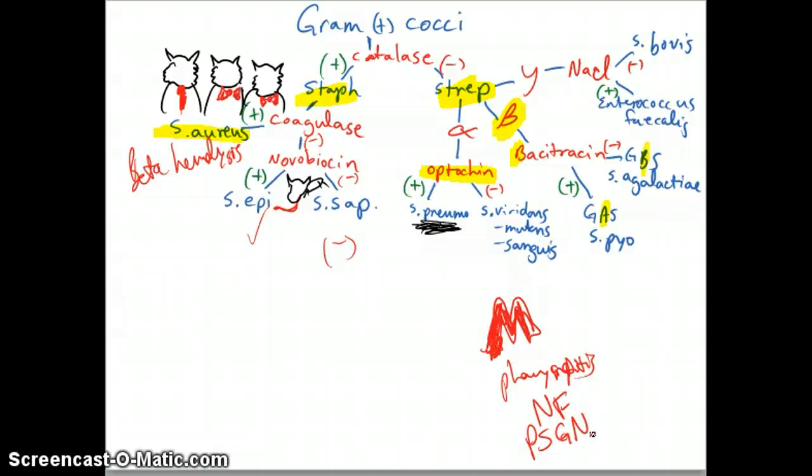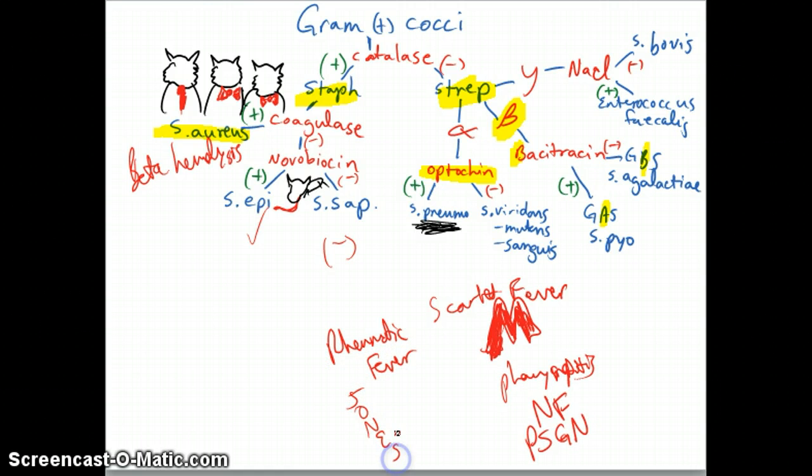So it's also going to cause scarlet fever, so think of this big red scarlet M. You can also remember, since it's group A strep, the A is for scarlet letter, scarlet fever. It's going to cause rheumatic fever. Now, an important thing to remember about this is if you get rheumatic fever, rheumatic fever can only occur after the strep that causes strep throat. So strep pyogenes, if it's not causing strep throat, you probably won't progress to rheumatic fever. If you get rheumatic fever, you're going to go check out the Jones criteria.